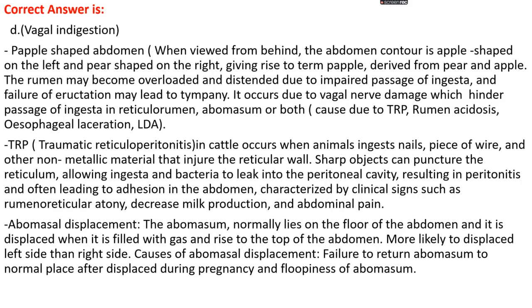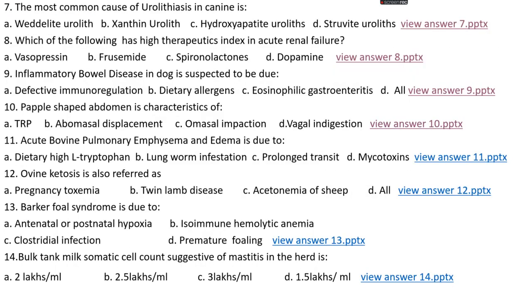Abomasal displacement occurs when the abomasum, normally on the floor of the abdomen, fills with gas and rises to the top. It is more likely displaced to the left side than the right. Causes include failure of the abomasum to return to normal position after displacement during pregnancy due to uterine enlargement, as well as the floppiness of the abomasum.